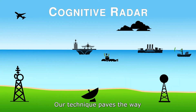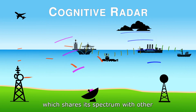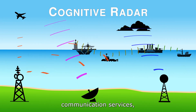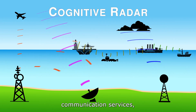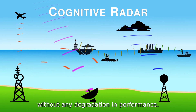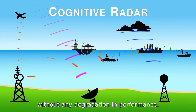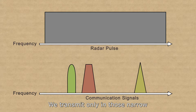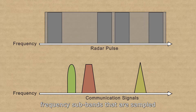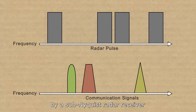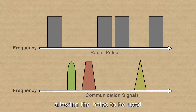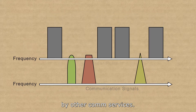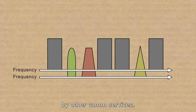Our technique paves the way for a cognitive radar which shares its spectrum with other communication services without any degradation in performance. We transmit only in those narrow frequency sub-bands that are sampled by the sub-Nyquist radar receiver, allowing the holes to be used by other communication services.